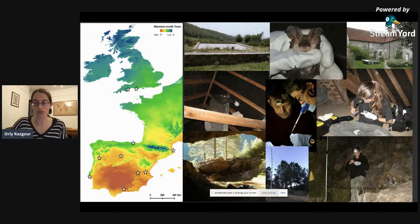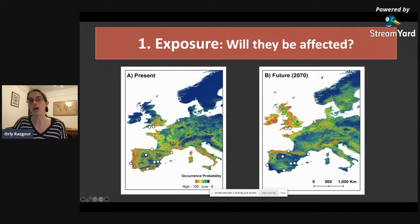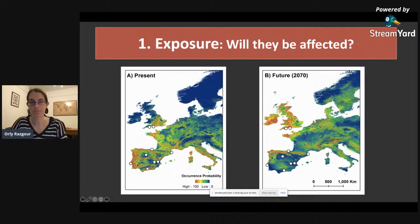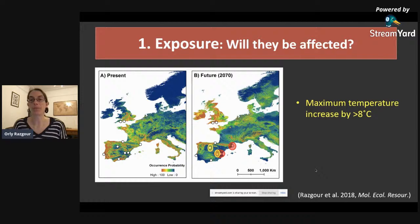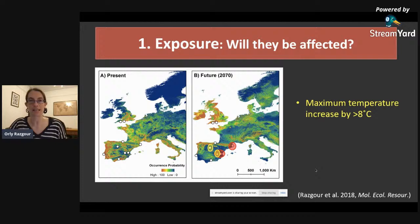First, we look at exposure — will they be affected by future changes? To do that we use species distribution models. The models on the left are present conditions, on the right future conditions by the end of the century using the more severe emissions scenario. Climatic suitability ranges from unsuitable in blue to suitable in orange and yellow colors. Under future conditions, three of our populations will be found under unsuitable conditions. We also look at environmental dissimilarity between current and future conditions, identifying populations found in areas where maximum temperatures will increase by over eight degrees Celsius, and those found in areas where summer rainfall will be reduced by over 50 percent.